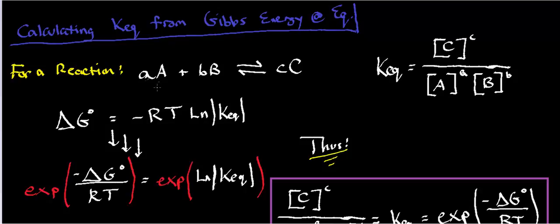So for a reaction, A moles of A and B moles of B going in equilibrium with C moles of C, the equilibrium constant expression we know is given by the product of the products divided by the product of the reactants. So that's C concentration of C to the C power divided by concentration of A to the A power divided by concentration of B to the B power.